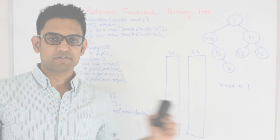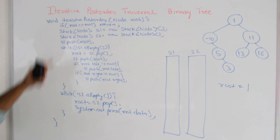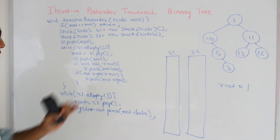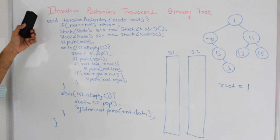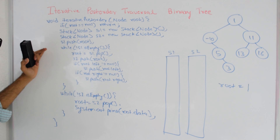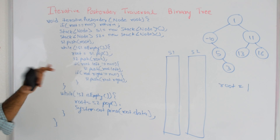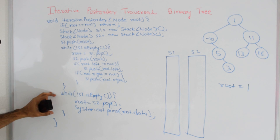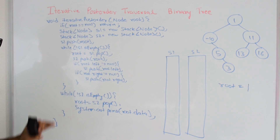Next let's look at the code for this algorithm. The name of the function is iterative post-order. It takes the root of the binary tree as a parameter and returns nothing since we are printing everything inside the function. If root is null we just return; otherwise we initialize 2 stacks, push root into Stack 1, and then repeat: while Stack 1 is not empty we pop from Stack 1, push into Stack 2, and if root's left and root's right are not null we push them into Stack 1.